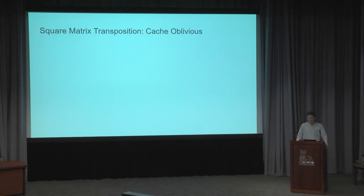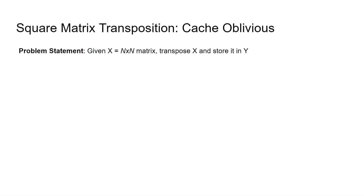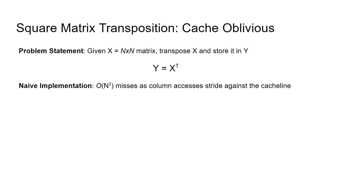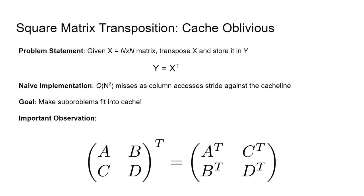Without further ado, let's look at square matrix transposition for cache-oblivious algorithms. The problem is to take a matrix X, transpose it, and store it in another matrix Y. The naive implementation has order N squared misses as column accesses stride against the cache line. Our goal, as we saw with cache-aware programming, is to have sub-problems fit into the cache for more efficient use. There's an identity from linear algebra: if we take a matrix and transpose it, we can represent it as a matrix built up of transposes of smaller matrices. For a matrix with sub-matrices A, B, C, and D, we break it into four smaller matrices — for a four-by-four matrix, these might be the two-by-two corner sub-matrices.